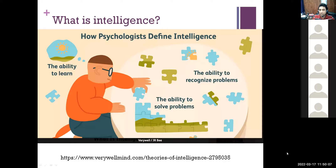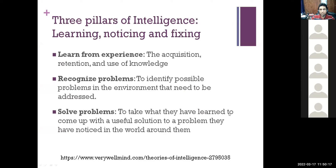So there are three pillars of intelligence: you learn from experience, you recognize problems by identifying possible problems in the environment you interact with, and you solve problems. All three have been discussed in good detail. In summary for today: why were people originally interested in intelligence? First, to rank children and give them a place in school. Second, to give the best methods so they can learn faster and more efficiently.